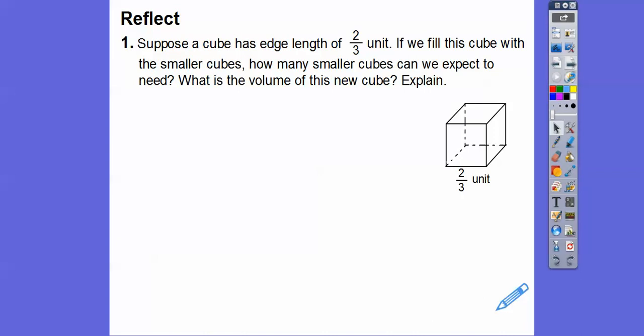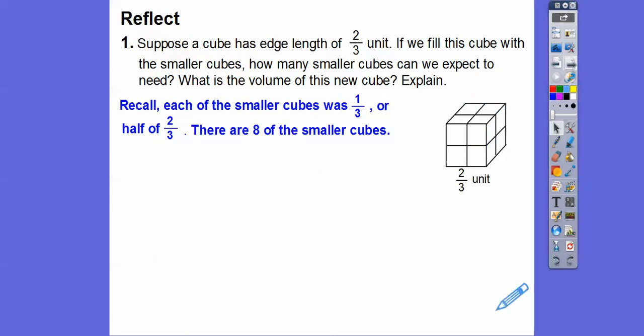Suppose the cube has edge length not 1 this time, but 2/3 of a unit. And if we fill that cube with the same smaller cubes, which were 1/3, how many cubes can we expect that we need for this one right here? And what's the volume of this new cube? Remember, the original smaller cubes were 1/3, which is half of 2/3. So if I cut that 2/3 up in the halves, each side right there, we get 4 in the front and 4 in the back, so there's going to be 8 of the smaller cubes right there.